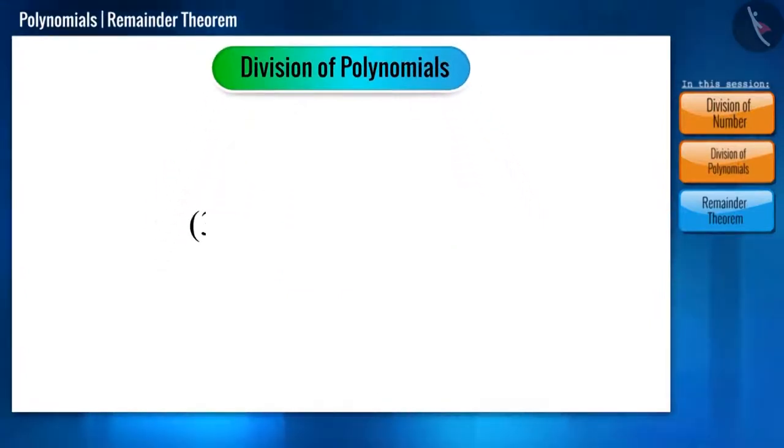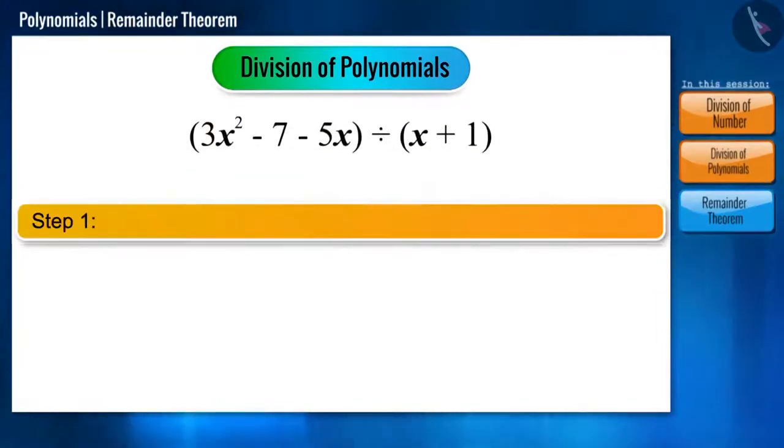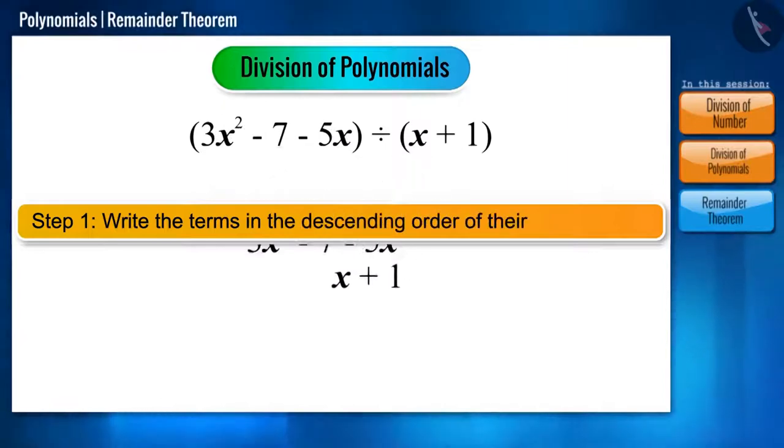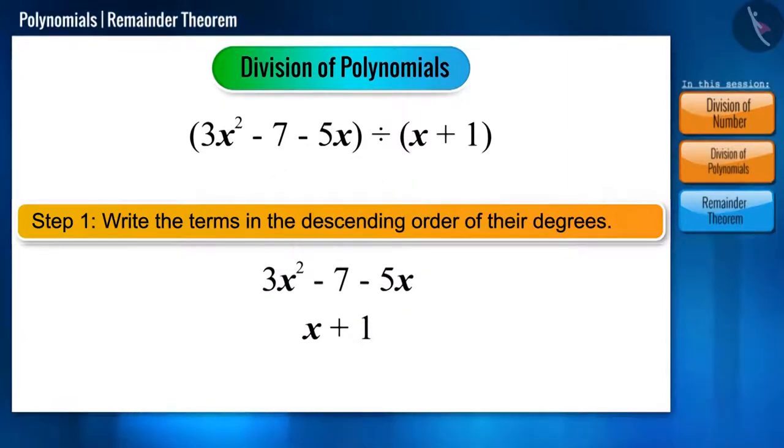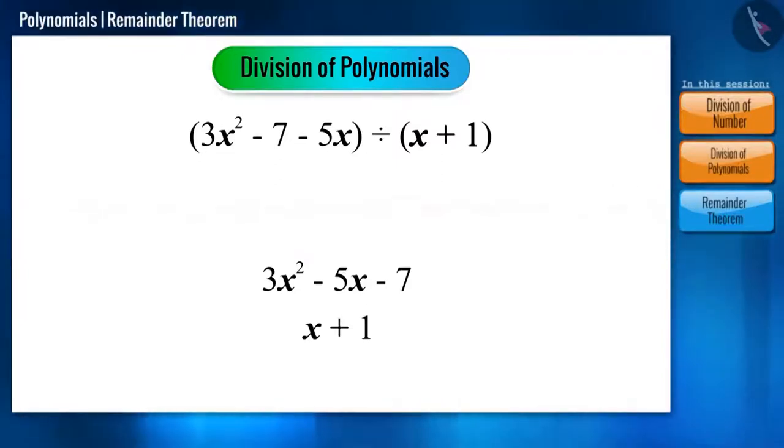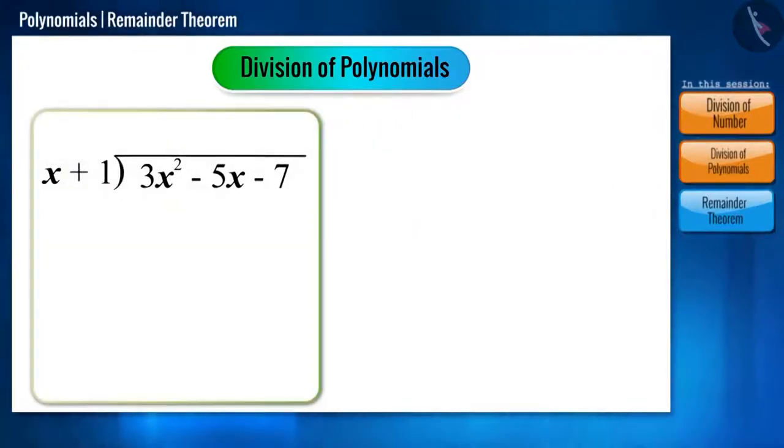Find the remainder obtained by dividing the polynomial 3x squared minus 7 minus 5x by x plus 1. Our first step is to arrange the terms in the polynomial in descending order of their power or degree. That is, starting from the term with highest power to the constant term. Now, let us solve using the division method.